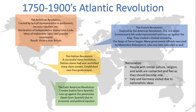The American Revolution was caused by lack of representation in Parliament and increased taxation. The Declaration of Independence shares much of John Locke's key concepts of unalienable rights and popular sovereignty. The result was that the Americans won over Britain due to the vast distance and familiarity with the land; the British fought in bright red clothes while the Americans fought in forests with camouflage.